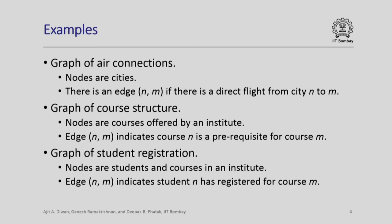Here the nodes are the cities in the country and there is an edge from node n to node m if there is a direct flight from city n to city m. The airline can represent their flights by a graph depending on which cities the flight connects. There may be an edge from node n to node m if there is a plane flying from city n to city m. If you look at courses offered in an institute, there is a graph which defines their structure, where the nodes are the courses and an edge (n, m) indicates that course n is a prerequisite for course m.